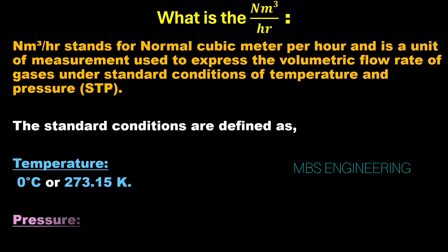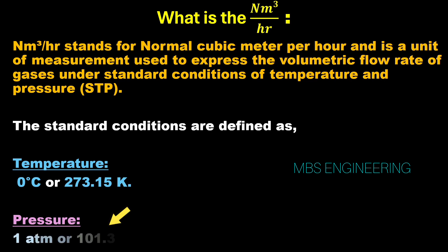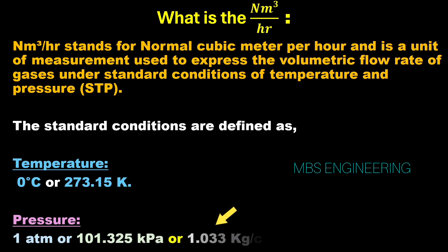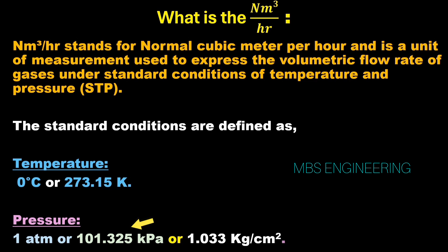The standard condition defined pressure is 1 atmospheric pressure, or 101.325 kilopascals, or 1.033 kilograms per centimeter square. Nm³/hr measures gas flow rate at normal temperature and pressure — 0 degrees Celsius and 101.325 kilopascals.